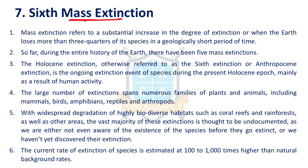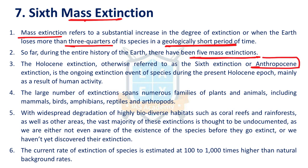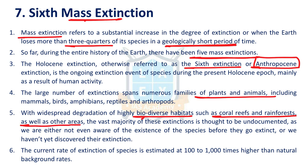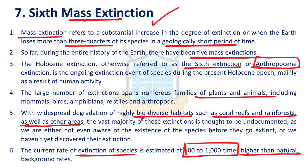The next issue is the sixth mass extinction. Mass extinction means a reduction in biological species by more than three-quarters. Mass extinctions have happened five times in history. The upcoming one, the sixth, is considered Anthropocene — caused by human activity. Biodiversity habitats such as coral reefs and rainforests are fast declining. The current rate of extinction of species is estimated to be 100 to 1,000 times higher than the natural extinction rate, which is why this is considered a sixth mass extinction caused by human factors.